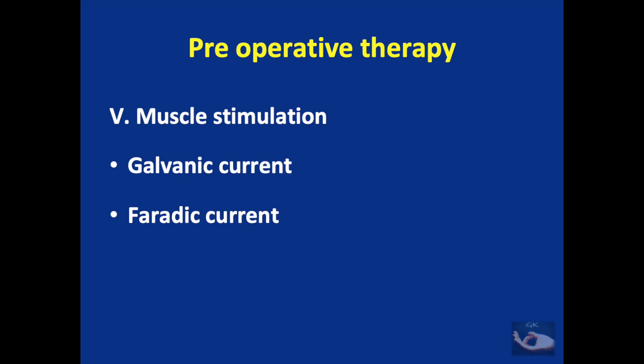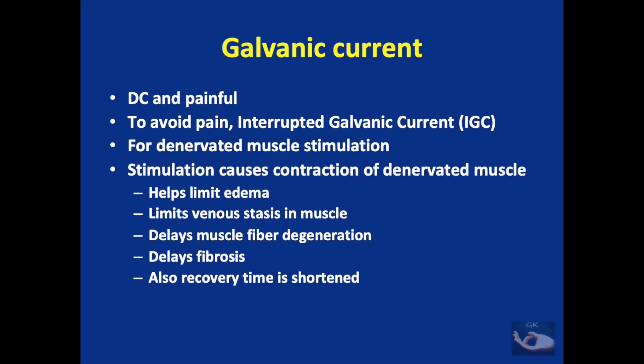The last feature of pre-operative therapy is muscle stimulation. There are two types of currents: galvanic and faradic. The galvanic current is a direct current, but it is painful, so interrupted galvanic current (IGC) is usually given. It is given for denervated muscle stimulation because galvanic current can act on a muscle that has been denervated. Stimulation causes contraction of the denervated muscle, which has five important uses: it limits edema, limits venous stasis in the muscle, delays muscle fiber degeneration, delays fibrosis of the muscle, and shortens recovery time.